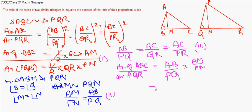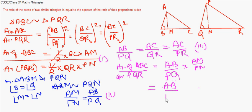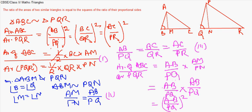Now AB/PQ was also shown equal to AM/PN, so I can substitute AM/PN with AB/PQ again. This gives (AB/PQ) × (AB/PQ), which equals AB²/PQ², or (AB/PQ) whole square.